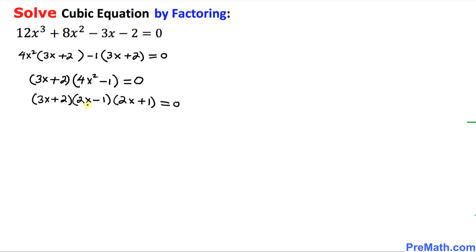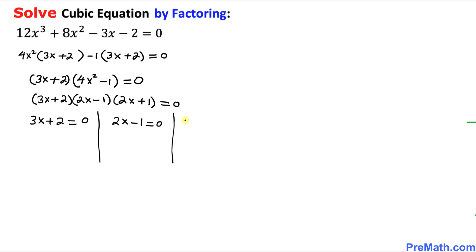We can see that we have these three factors equal to 0, so we can easily separate them. We can write 3x plus 2 equal to 0, 2x minus 1 equal to 0, and 2x plus 1 equal to 0. Now let's solve for x.